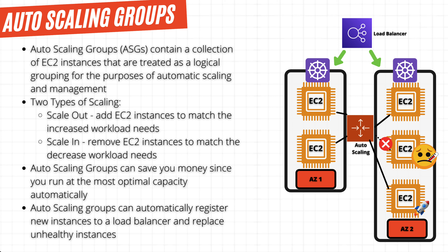When these new instances get deployed, we can also ensure they will get registered or deregistered with the load balancer automatically. For example, let's say that one of our EC2 instances becomes unhealthy and it starts failing. The auto-scaling group can detect the issue with the server, replace the instance with a healthy instance, deregister the unhealthy instance, and then proceed to registering the new instance with the load balancer.